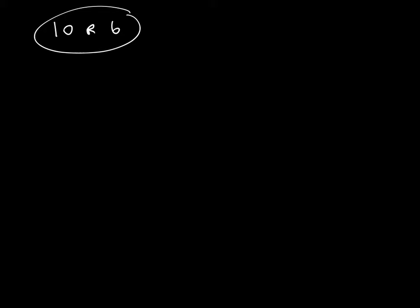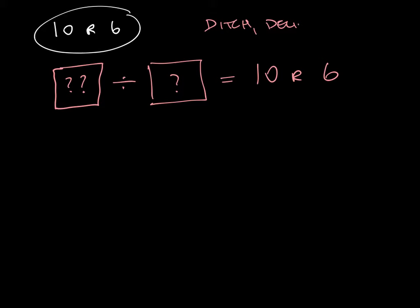So you have to work backwards a little bit on this one. You had to consider, okay well, we've got some sort of mystery number and it's shared by another mystery number and it's going to give me an answer of 10 remainder 6. So we have to do a little bit of backwards thinking here, and we also have to think about whether or not we ditch a remainder.